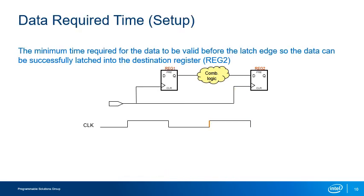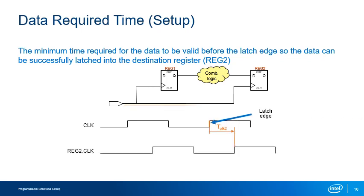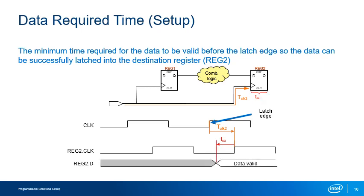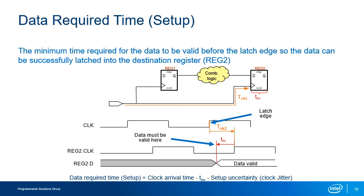The data required time is the time that a signal from the source register must arrive at the D-input of the destination register to be properly sampled. For setup, based on the latch edge and clock arrival time, the setup data required time depends on the setup time (TSU) of the destination register, which is a function of the silicon. The setup required time equals the clock arrival time minus TSU of the destination register, minus an optional setup uncertainty. This setup uncertainty can account for non-ideal clock conditions such as jitter or a guard band.